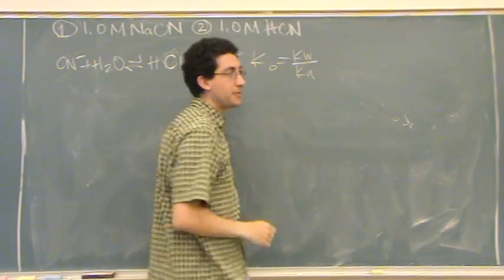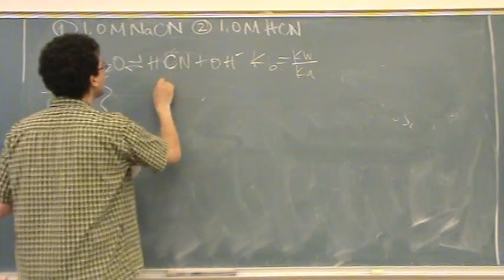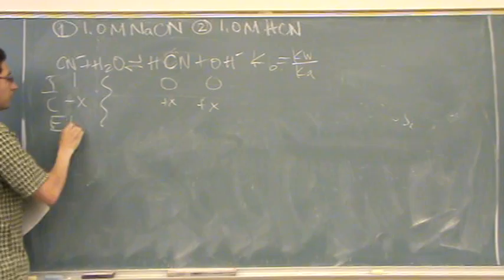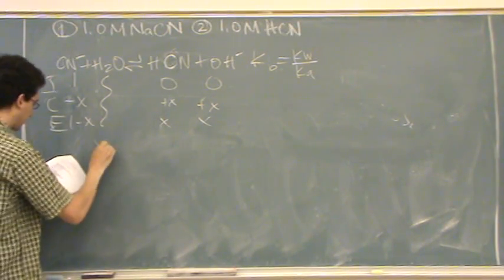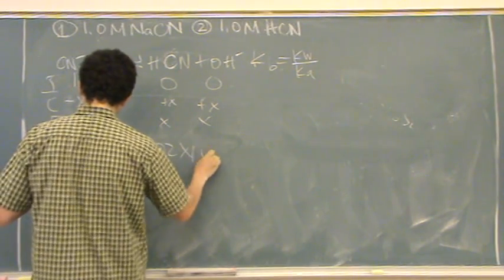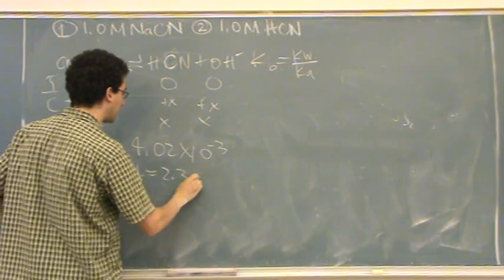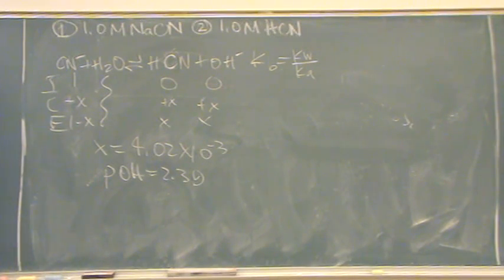So then you set up the ICE table: initial is 1, ignore water, zero, zero. Change is minus X, plus X, plus X. Equilibrium is 1 minus X, X, and X. Make an assumption — you don't need the quadratic. You'll end up getting X = 4.02 × 10⁻³, so pOH = 2.39. Is that what you'd expect? POH less than 7 means it's a base. You can check the assumption if you want.